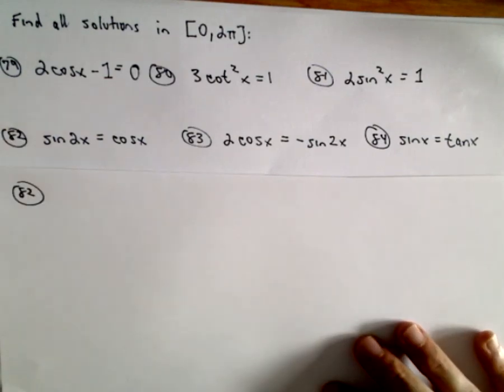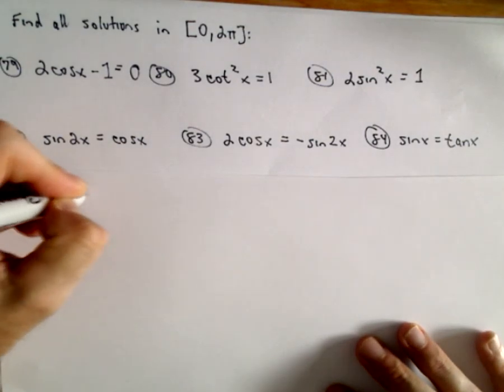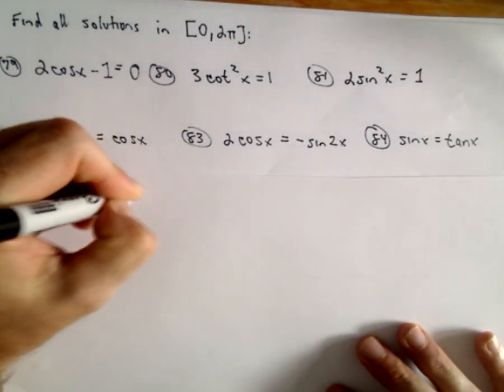So the first thing I'm going to do for 82 is use an identity. Sine of 2x, that's 2 sine x times cosine x.